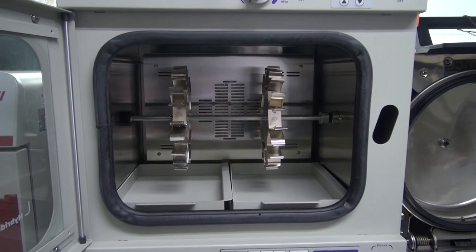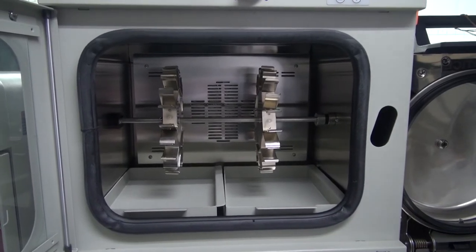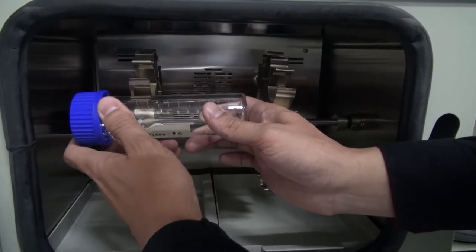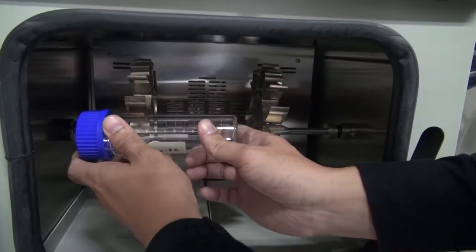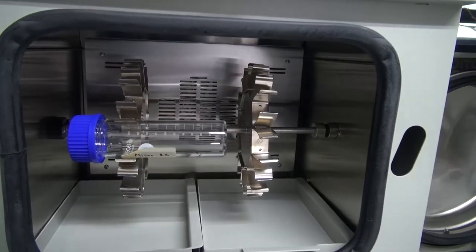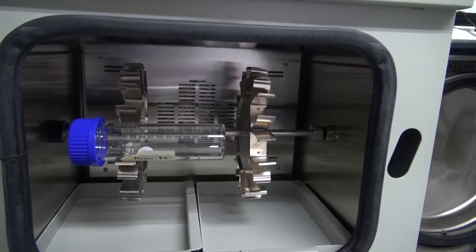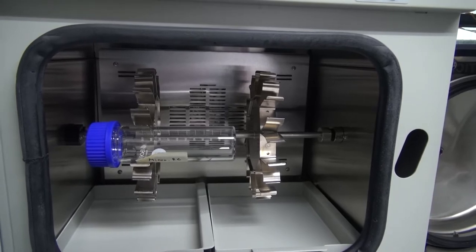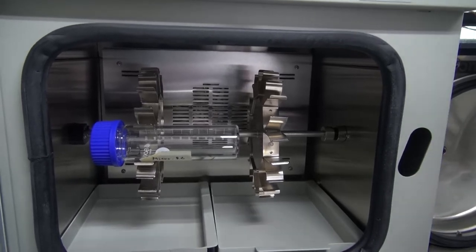To insert the bottle into the bottle clip, gently push the bottle into the clip as shown here. For the long bottle, use two clips. For long bottle, insert one side at a time.